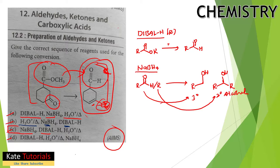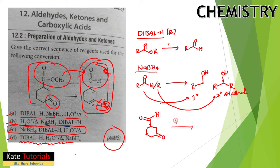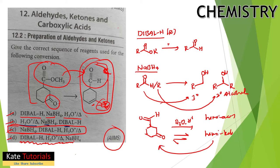We can also verify by trying option D. DIBAL-H is applied first, converting the ester to an aldehyde. Then acidic hydrolysis is applied — but with an aldehyde or ketone, this only forms hemiacetals (or hemiketals), which are in equilibrium and revert back to the original carbonyl, so no useful product is obtained. The correct answer is option C.